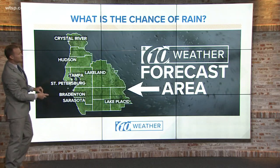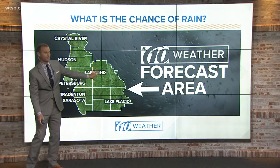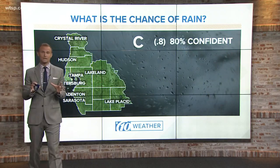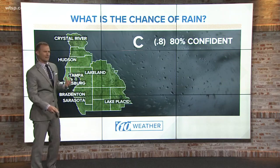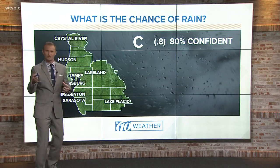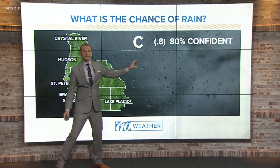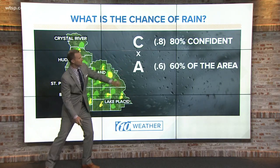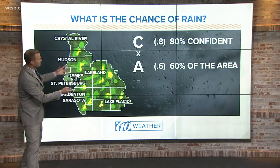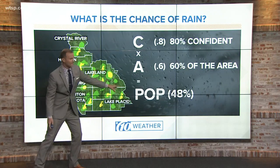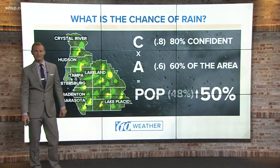Here's the entire forecast area we forecast for here at 10 News — Citrus County to Sarasota, from Pinellas to Polk County. This entire area we have to consider, and we have to come up with the confidence that it's going to rain. Are we sure? Are we really sure? For example, we're 80% confident that it's going to rain, and we think 60% of the area is going to see that rain — so that would be like scattered showers. You multiply those together, and it comes up to 48%. We'll round it up to 50%, and that's what it means when you get a 50% chance of rain.